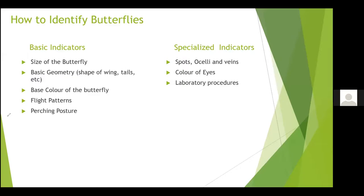The base color of the butterfly is also an indicator of the species, and how it flies and how it perches. Those are some basic indicators. Sometimes with experience we can easily tell a species name by just looking at the butterfly flying past you. I am trying to address both experienced people and novices here.